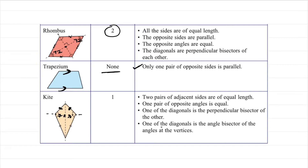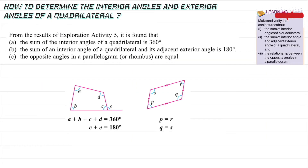So how do we determine interior and exterior angles of a quadrilateral? The sum of all interior angles of a quadrilateral is 360 degrees — different from a triangle which is 180. The sum of an interior angle and its adjacent exterior angle is 180 degrees. Also, the opposite angles in a parallelogram or rhombus are equal, as we saw in their properties.